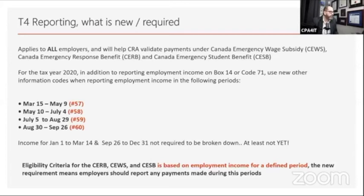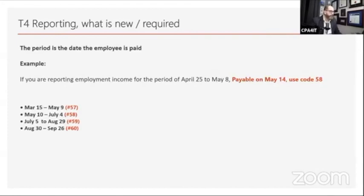For tax year 2020, in addition to the regular box 14 for employment income or code 71, four additional boxes are required. Box 57 covers employment income paid between March 15 and May 9; subsequent boxes cover periods through September 26 — matching the CERB eligibility window. Income before this period, from January 1 to March 14, or after September 26 to December 31, is not required to be broken down. The date used is the pay date, not the payroll period.